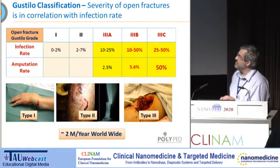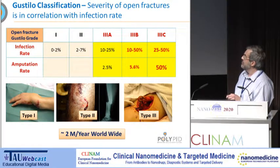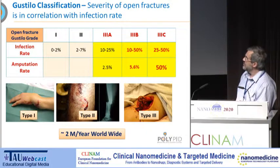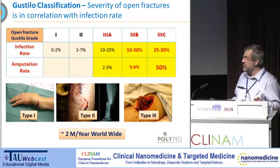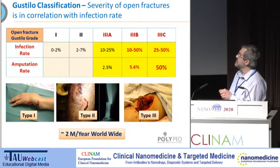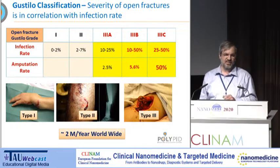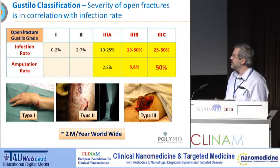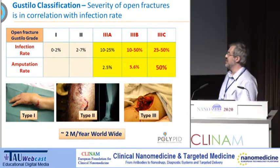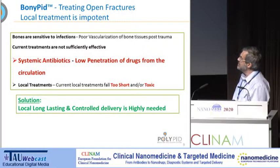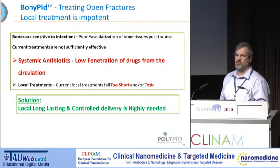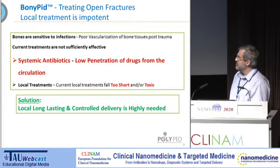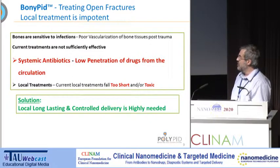This is the situation today. There is the Gustilo grading — grades 1, 2, 3A, 3B, 3C. You can see the infection rate goes up and the amputation rate goes up — that's the meaning of type 3 fractures. About 2 million events per year worldwide. Despite using all known surgical techniques, devices, antibiotics, and other drugs, the situation is still considered very, very bad. The core reason: systemic antibiotics can hardly penetrate into bone fractures. Therefore, the basic solution should include local delivery that is prolonged and controlled.